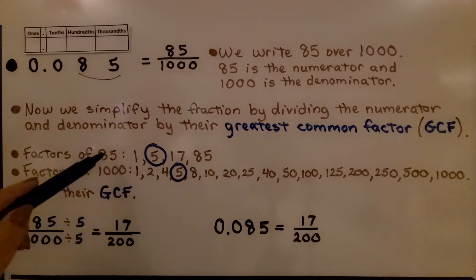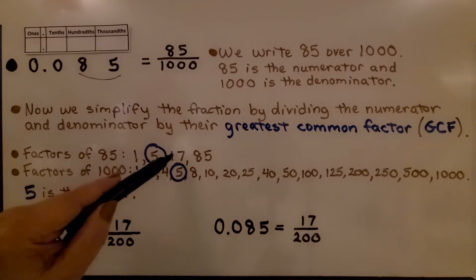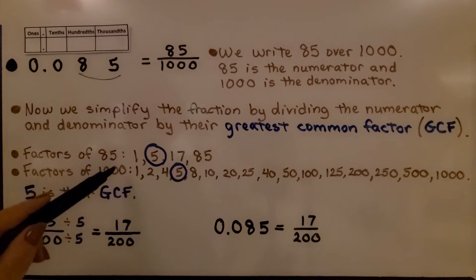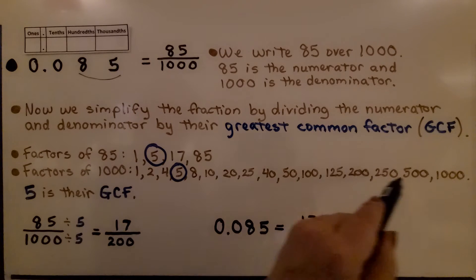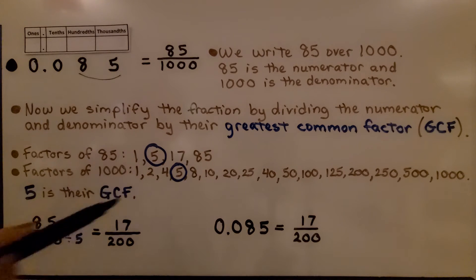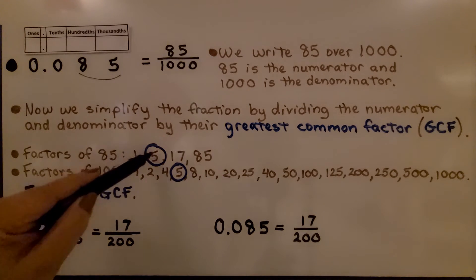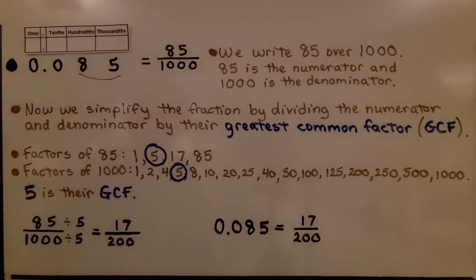The factors of 85 are 1, 5, 17, and 85. And the factors of 1000, we have quite a few. Their greatest common factor would be 5. That's their GCF. We divide the 85 numerator by 5 and the 1000 denominator by 5 and we get 17 two-hundredths. So, 85 thousandths is equal to 17 two-hundredths in simplest form.